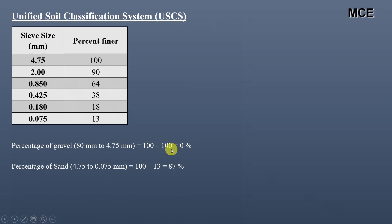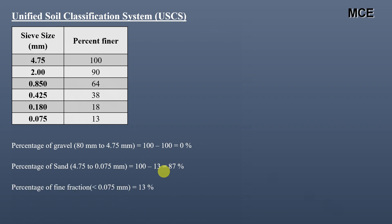The percentage of sand, measured from 4.75 mm to 0.075 mm, is 100 minus 13, which equals 87 percent. The value 13 is the percent finer for the 0.075 mm sieve. The percentage of fine fraction, which includes silt plus clay — material smaller than 0.075 mm passing the 75 micron sieve — is 13 percent.